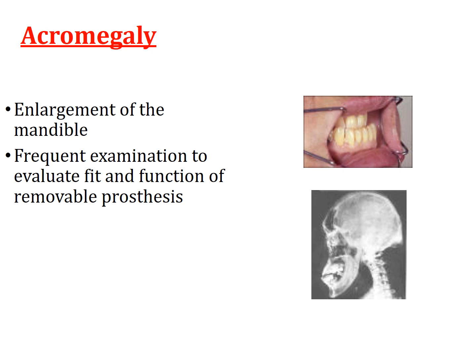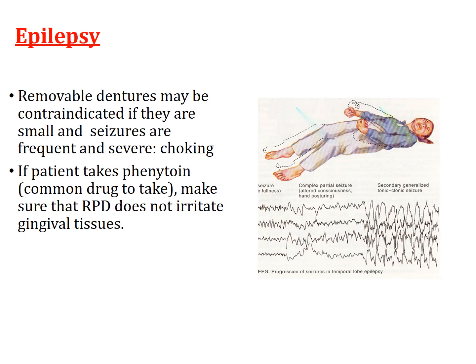With acromegaly, occlusion becomes difficult and you have to assess the amount of force generated on the prosthesis. You may need to set the teeth in a crossbite arrangement. For epilepsy, the patient can fracture and break the RPD, so you need to consider unbreakable dentures, cast partial dentures, or dentures with metal bases. Small prostheses should not be fabricated for these patients.